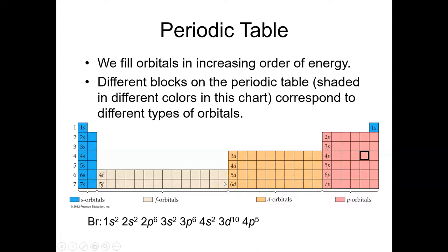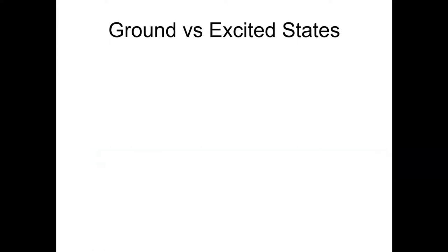Using the noble gas shorthand, bromine would be [Ar], 4s2, 3d10, 4p5, since argon is the previous noble gas. Now let's finish up by talking about the difference between ground states and excited states. We've talked about three rules: Hund's rule, the Pauli exclusion principle, and the Aufbau principle. It turns out some of these can be violated.